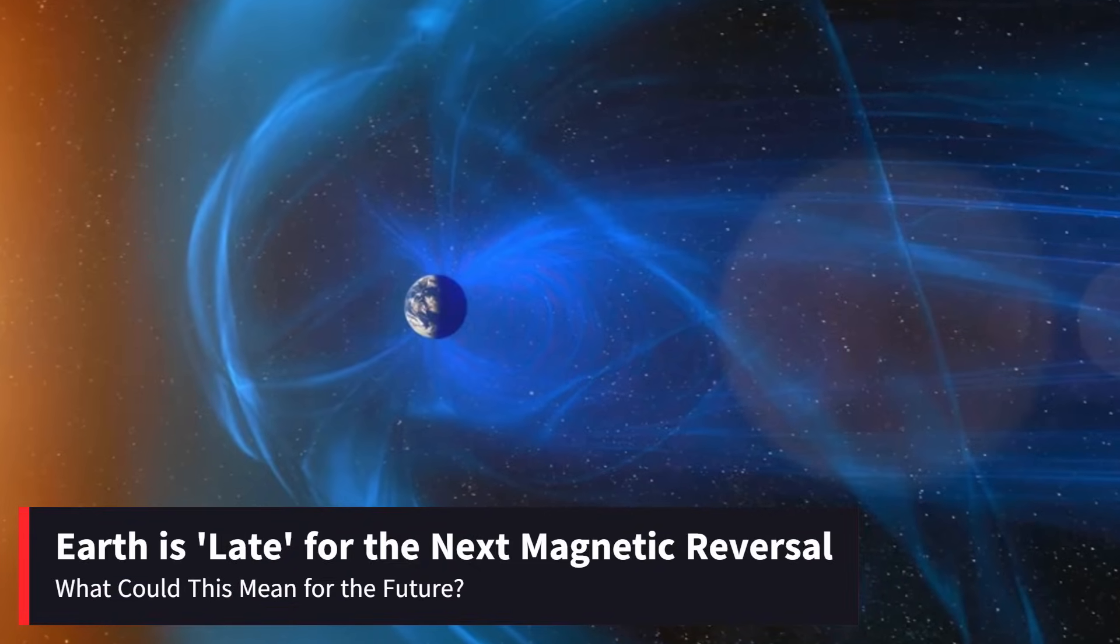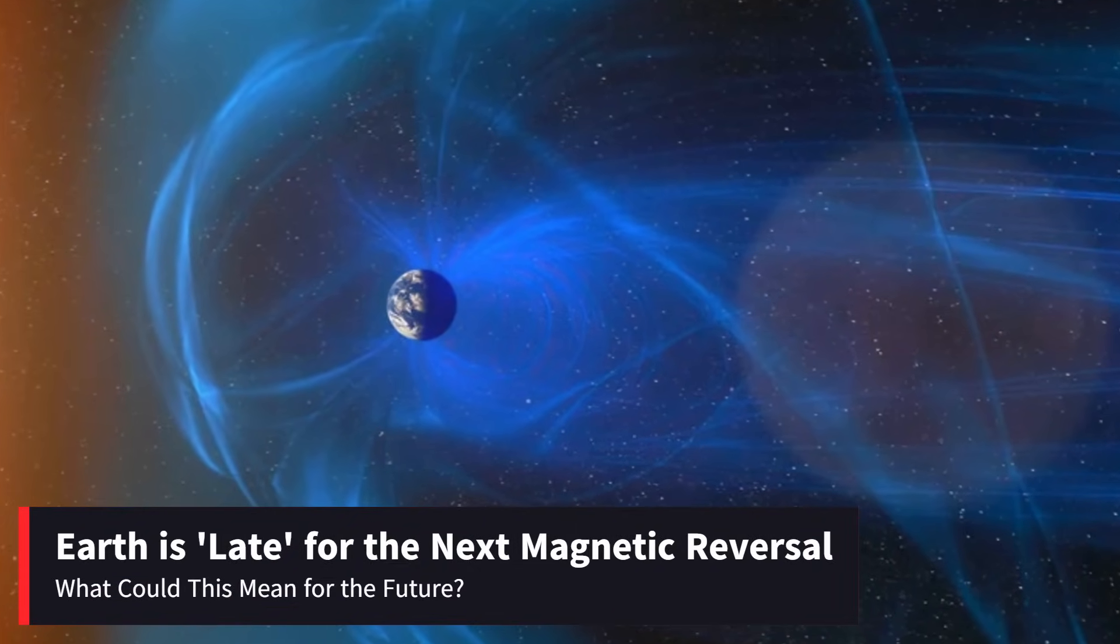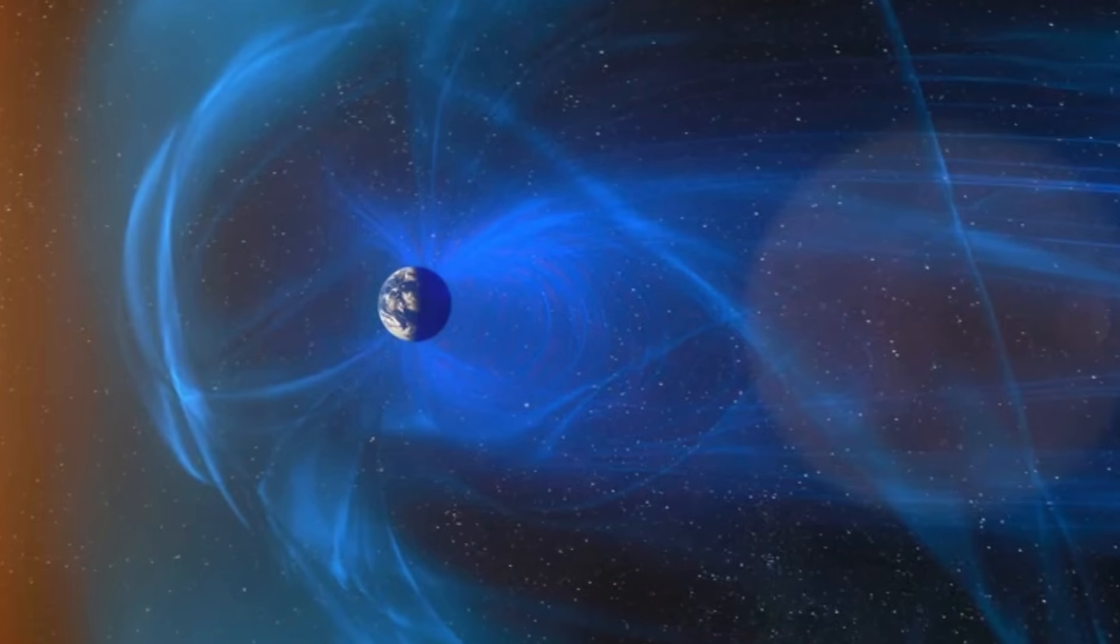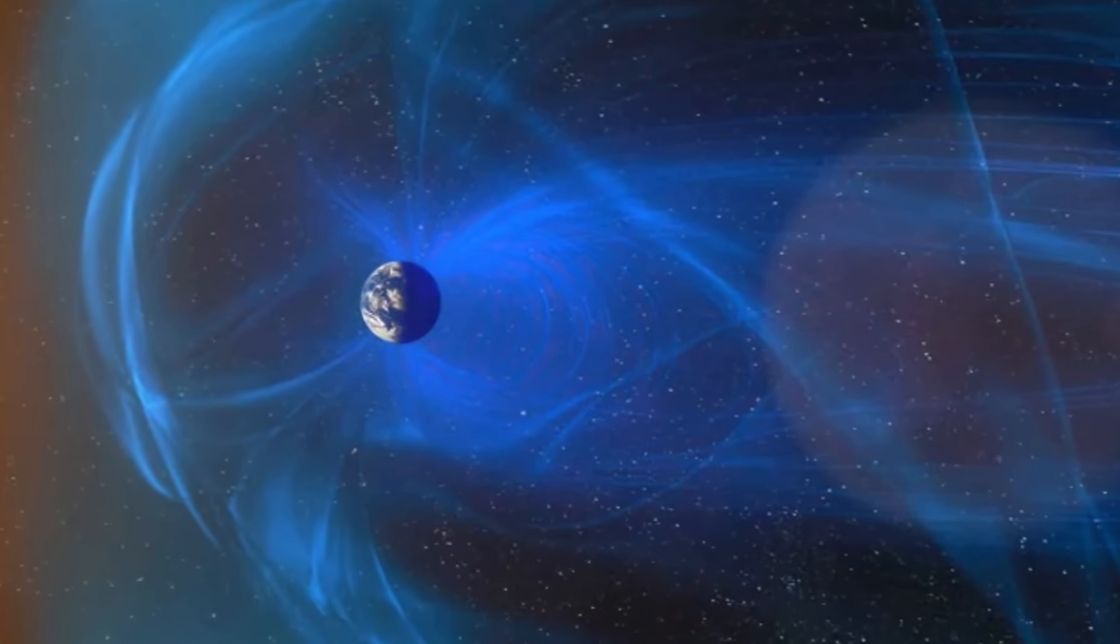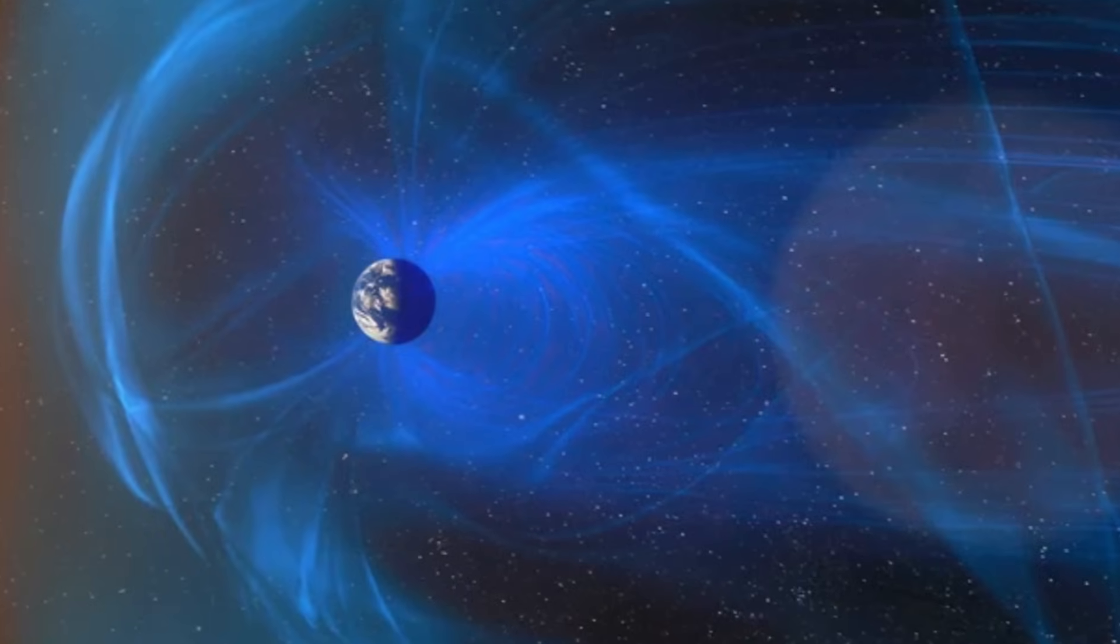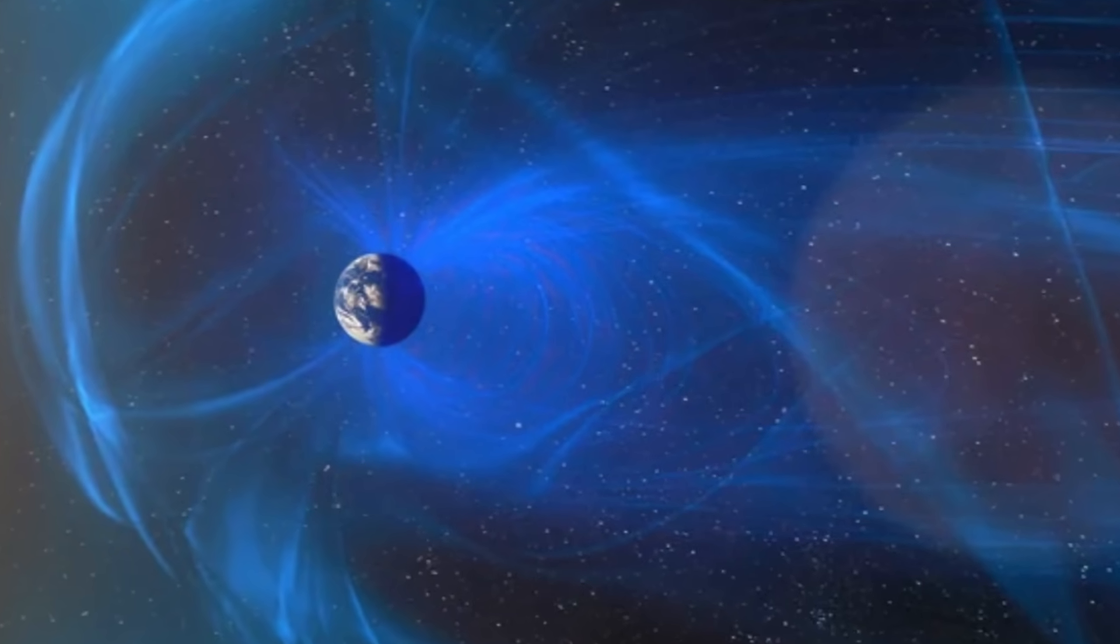Earth is late for the next magnetic reversal. What could this mean for the future? The reversal of Earth's magnetic poles is a phenomenon that has occurred periodically throughout the planet's history. During these reversals, the magnetic North Pole becomes the South Pole and vice versa.